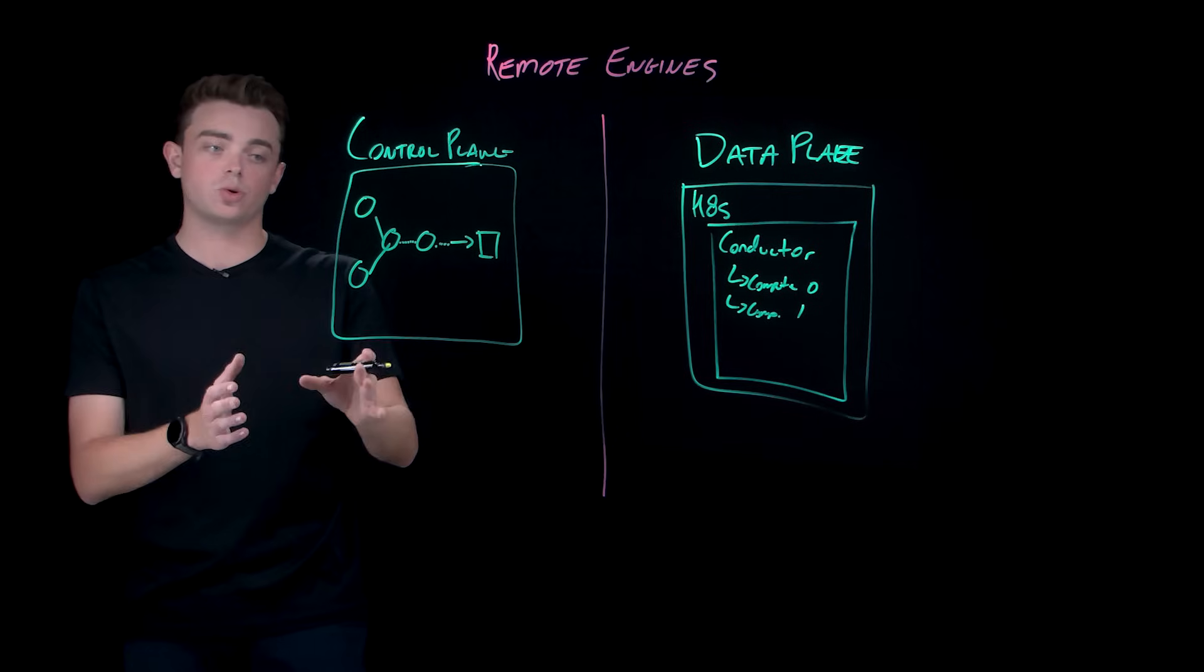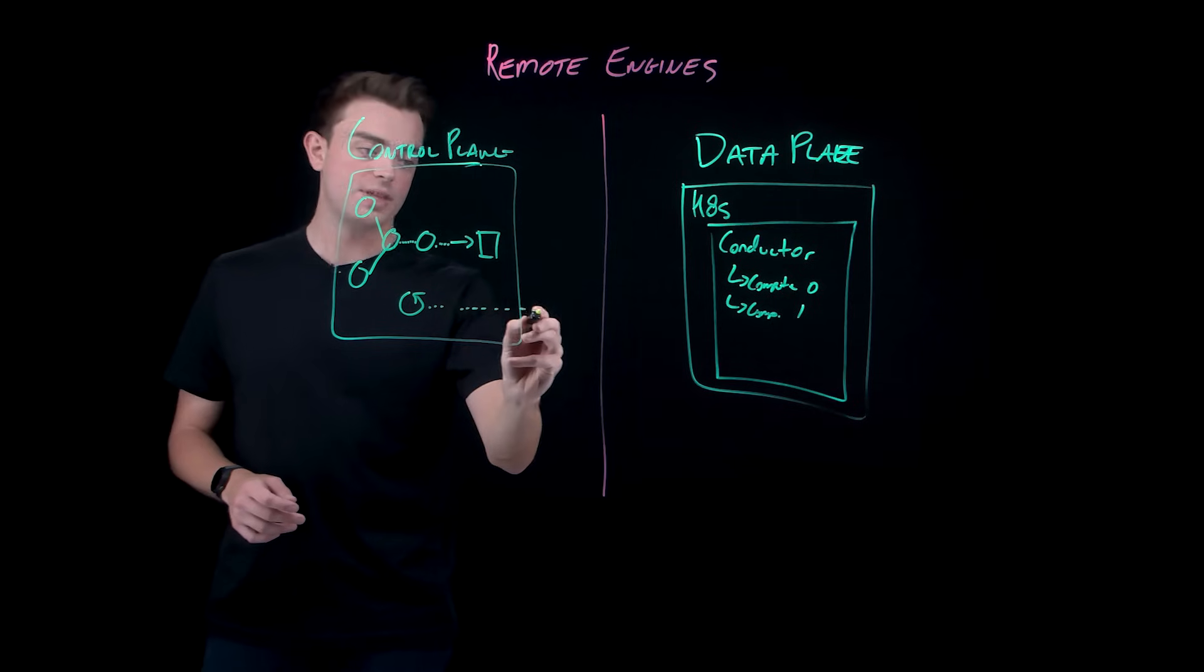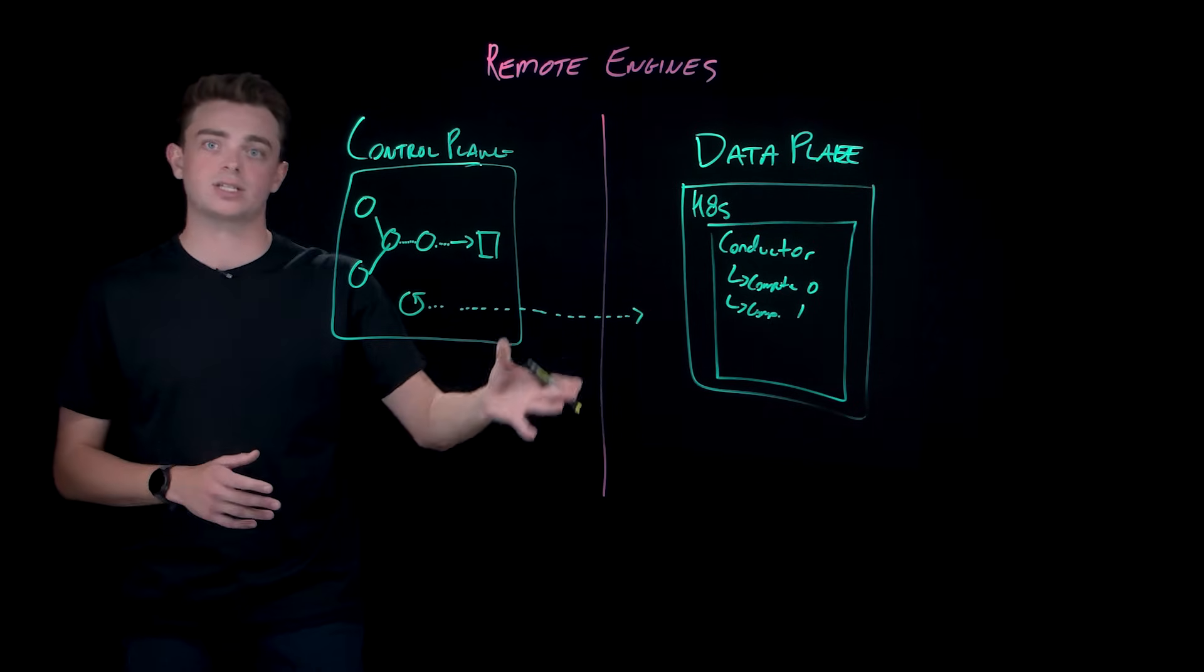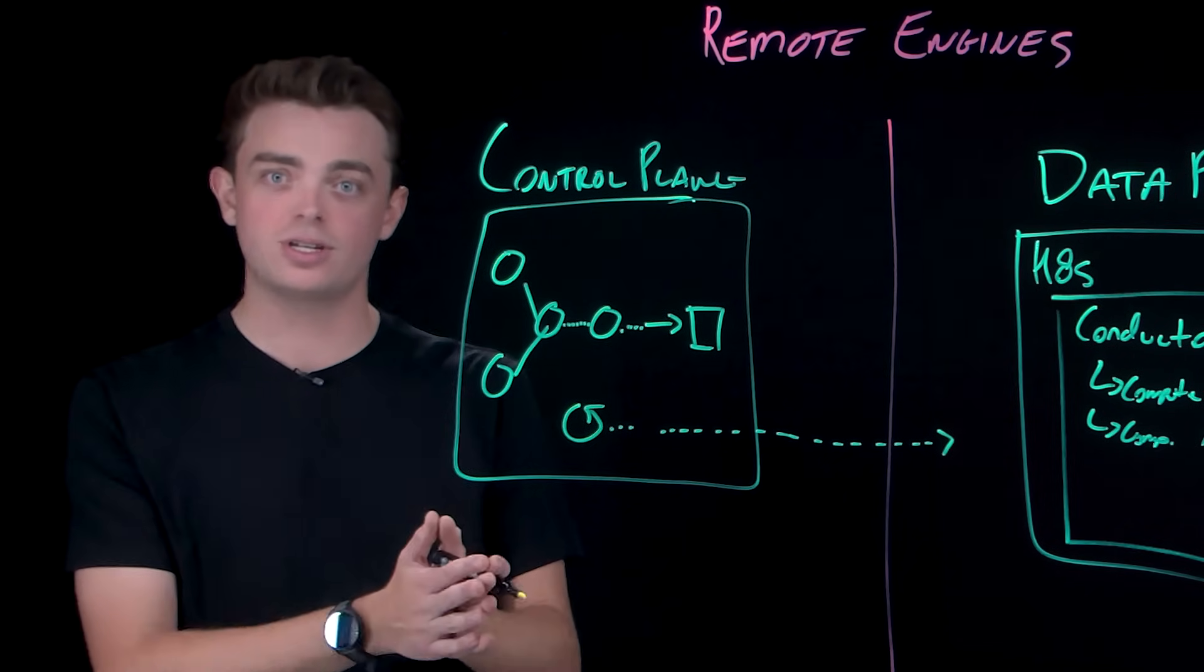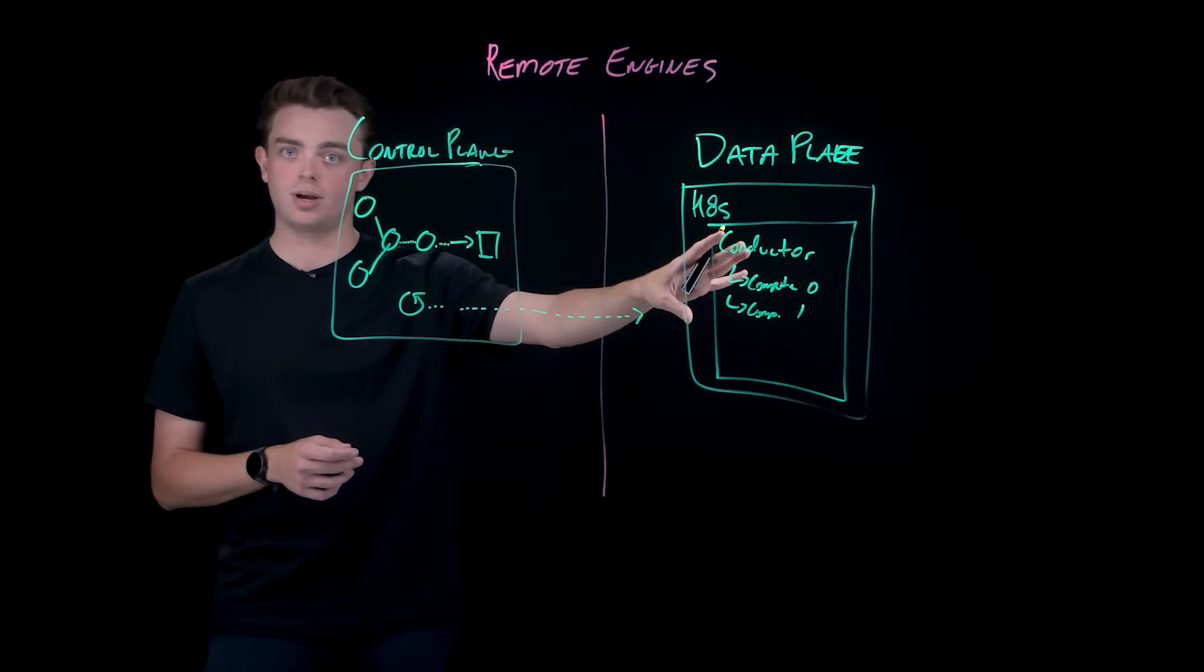What we have is the control plane manages the compilation of these jobs in the code, and then sends that information down to the data plane, where that actually gets executed. This is a simple explanation of how organizations can use the control plane to design jobs and a data plane to actually run the jobs.